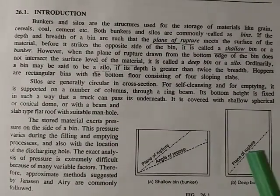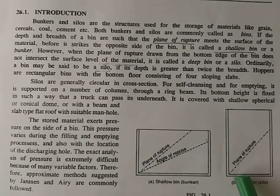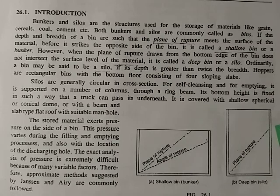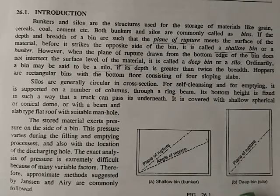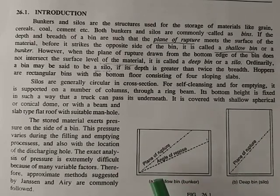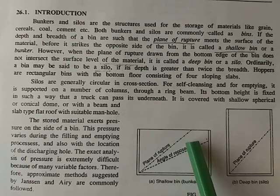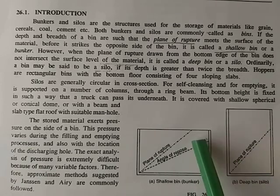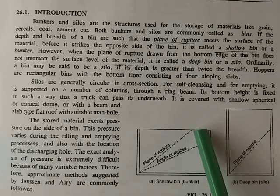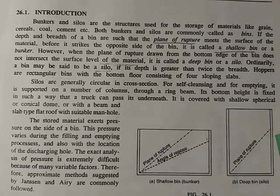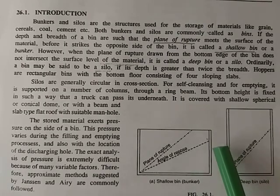If the depth of the structure is greater, meaning the plane of rupture falls on the opposite surface of the wall, that bin is called a silo. If it is a shallow structure and the plane of rupture falls in the top surface, it is defined as a bunker. So the major difference is whether the plane of rupture falls on the opposite side of the wall (silo) or not (bunker).